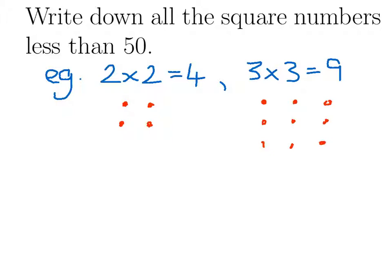And all we need to do to write down all the square numbers less than 50 is start with 1 times 1, which gives you 1. And then we have 2 times 2, which is 4. 3 times 3 is 9. 4 times 4 is 16.